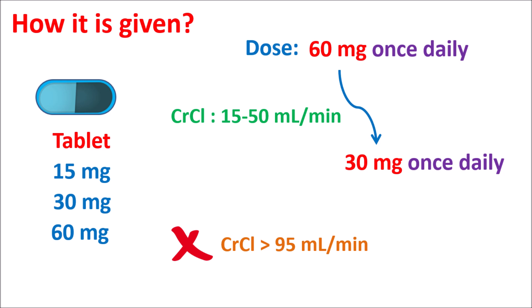That's all about Edoxaban, which is a factor Xa inhibitor acting as an anticoagulant that controls thrombus formation and thromboembolism. It can be used in conditions like deep vein thrombosis and pulmonary embolism coupled with non-valvular atrial fibrillation. Risk of bleeding is one of the important precautions, and in people with pathological bleeding this drug should be avoided.